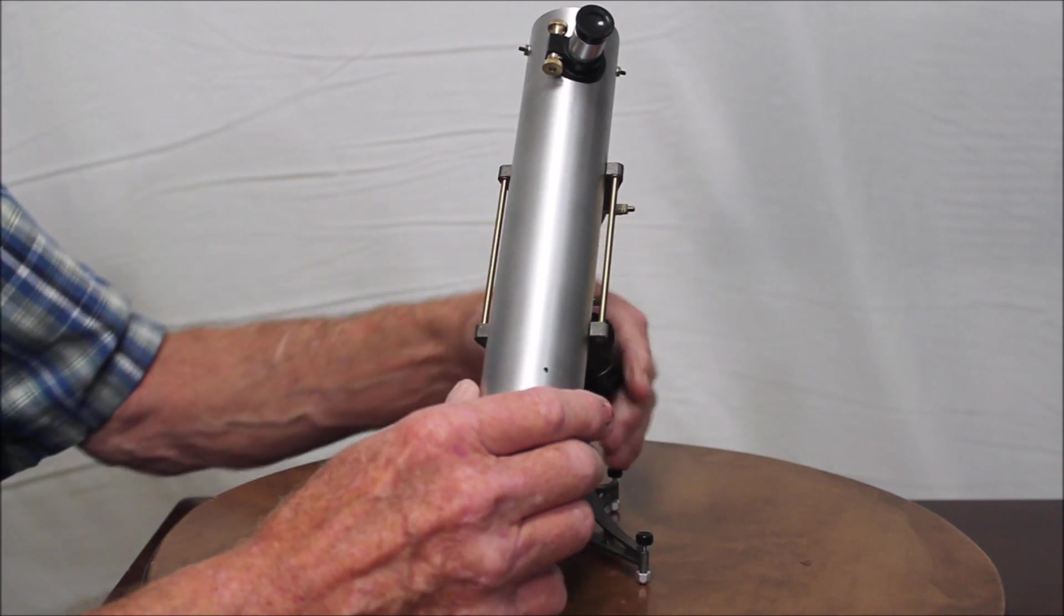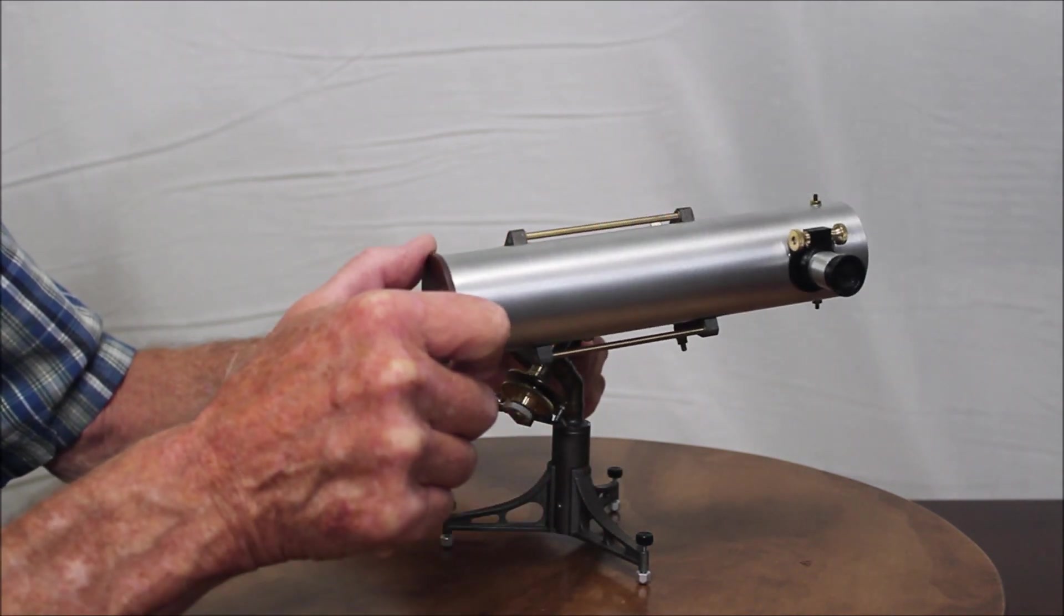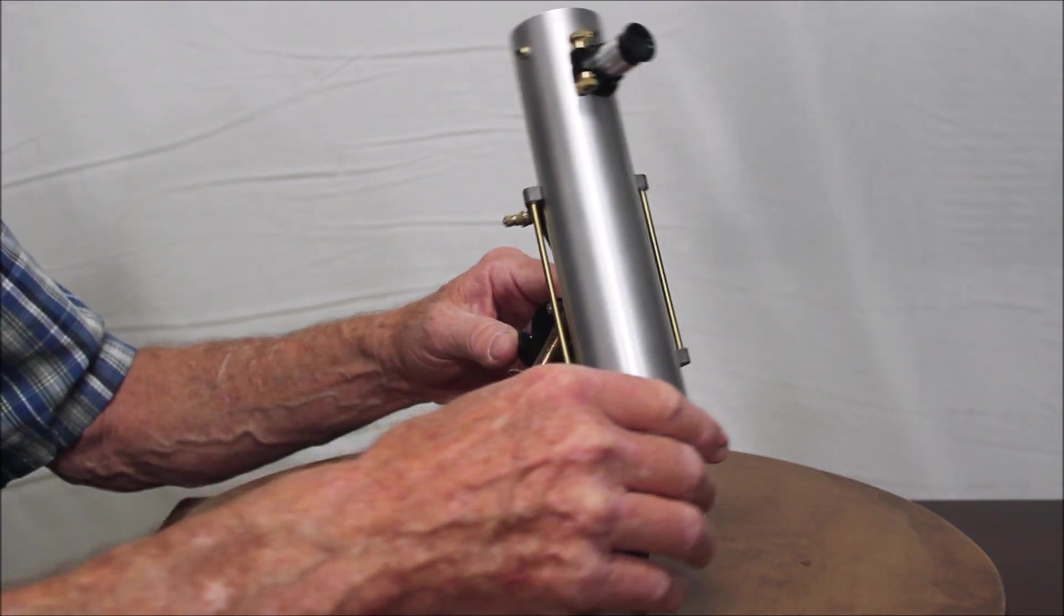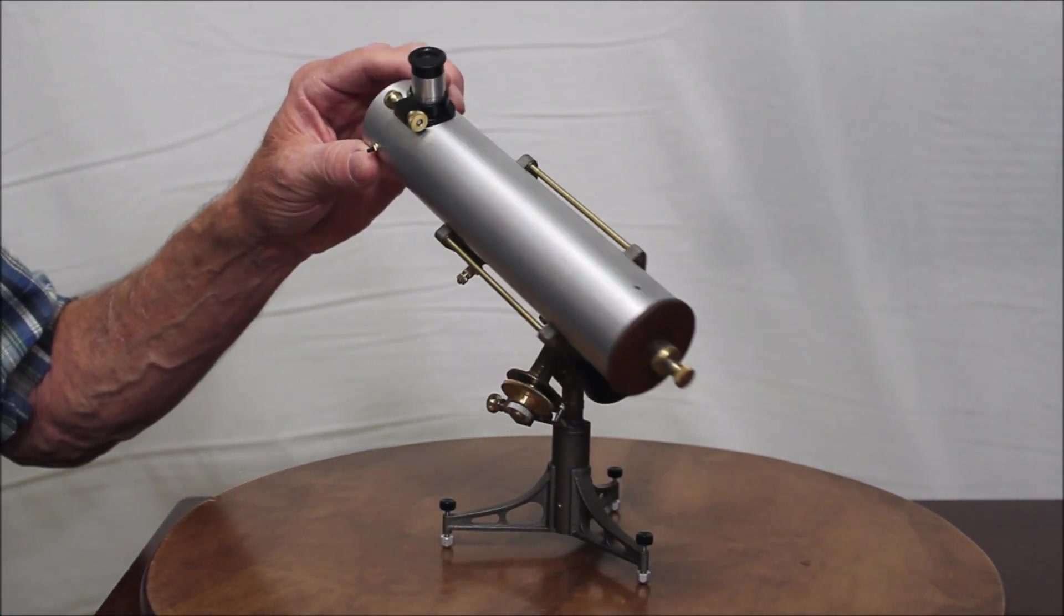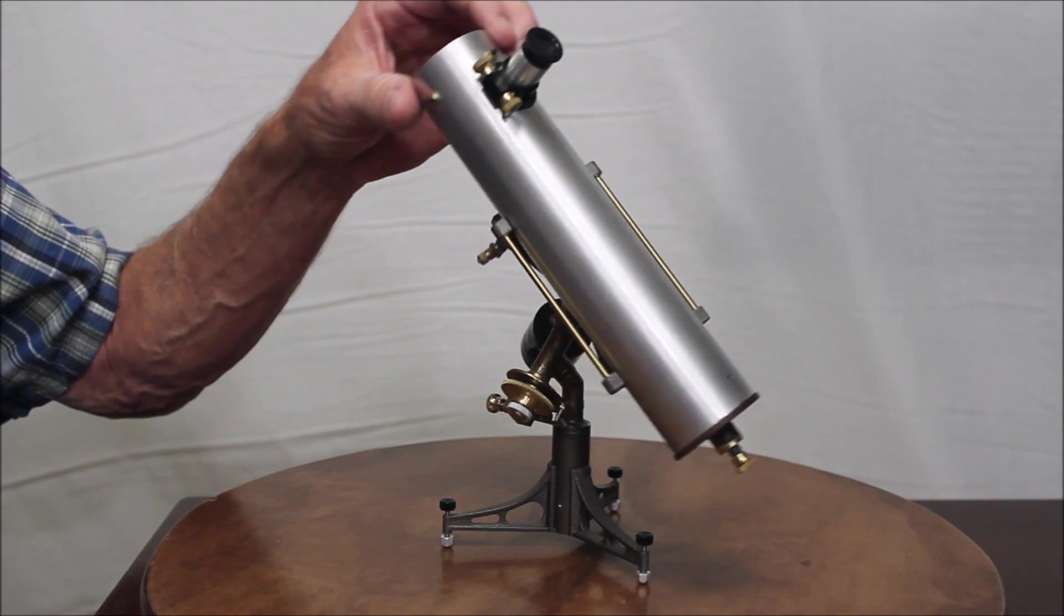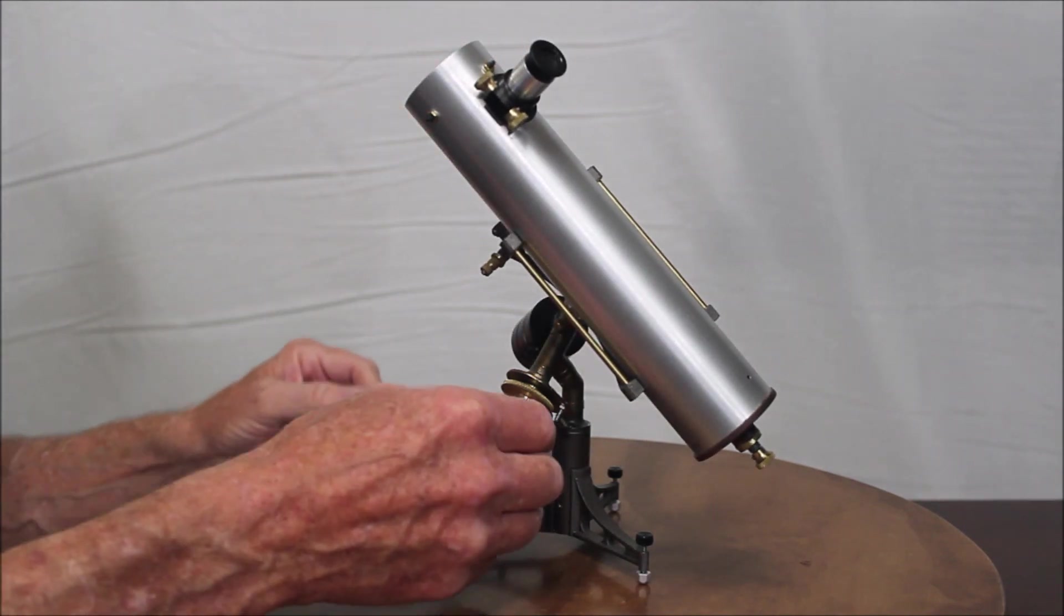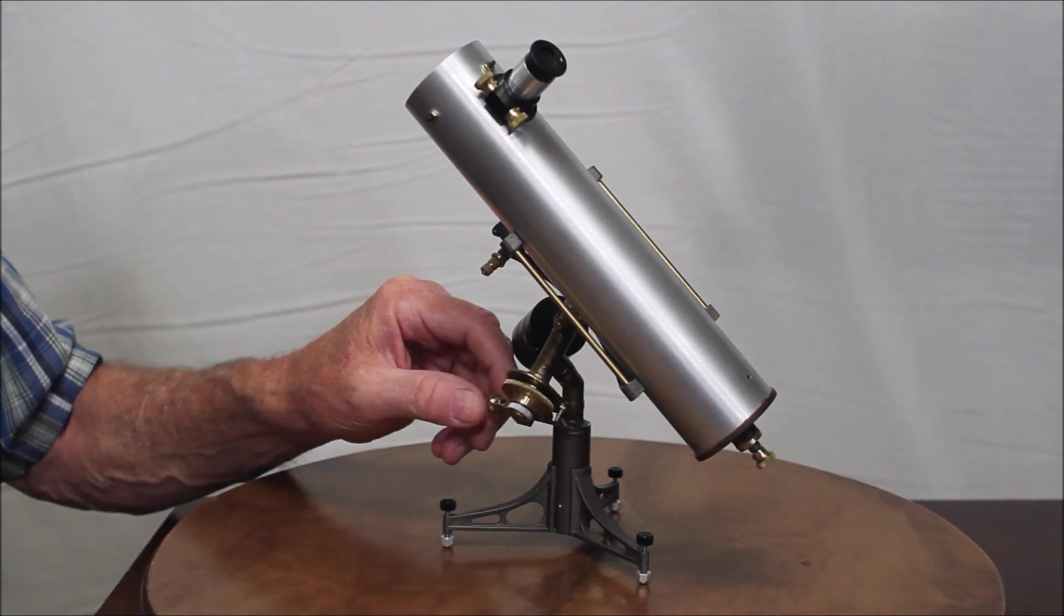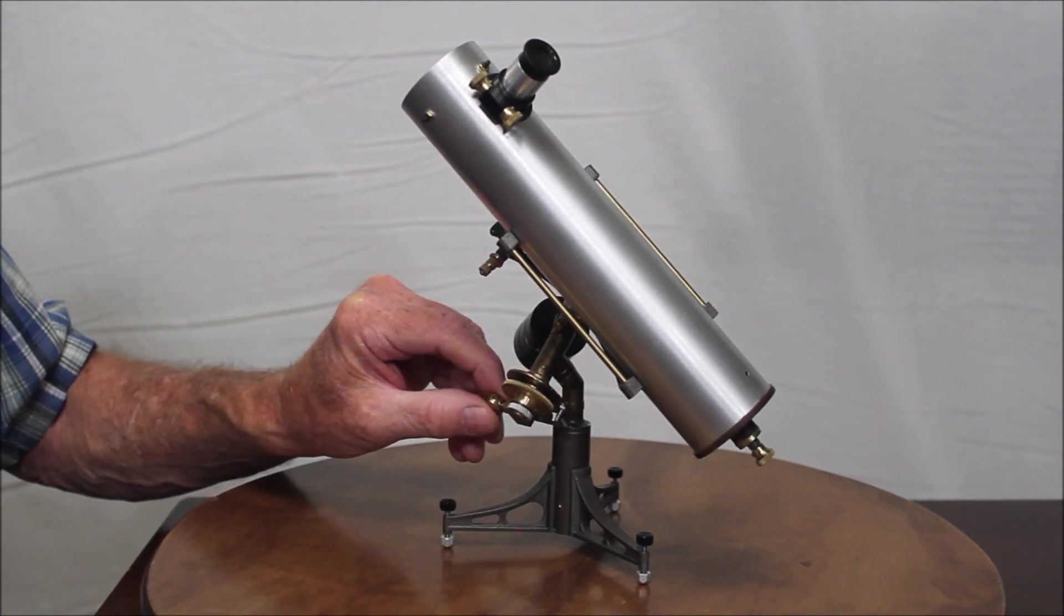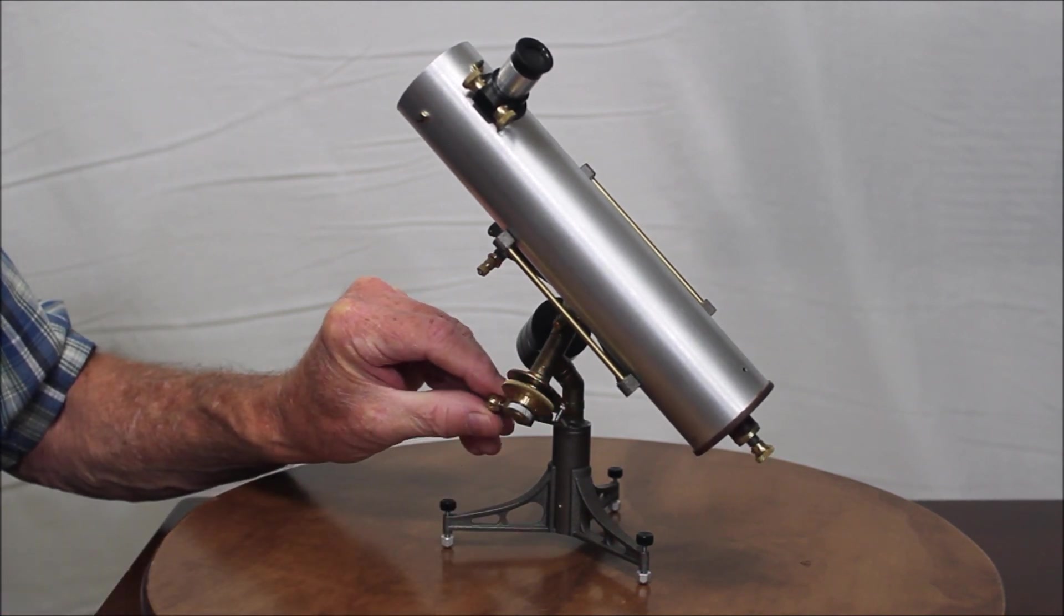Loosen up some clutches. You can see there's a clutch right here for the right ascension. Beautiful. There's the right ascension slow-motion. See how that's moving?